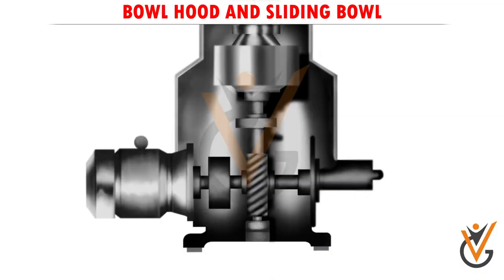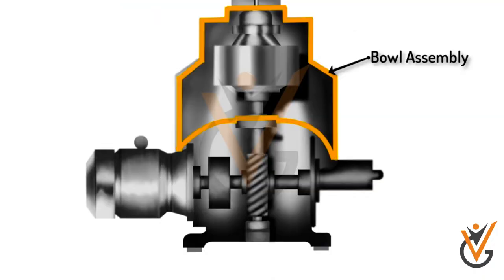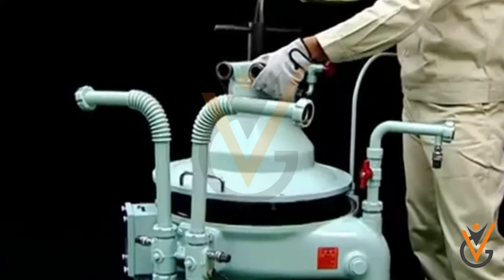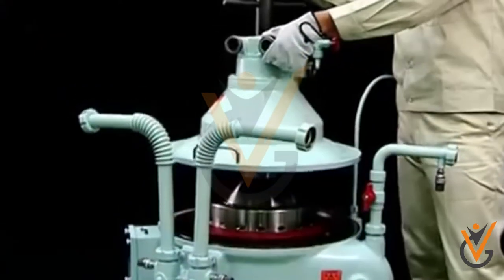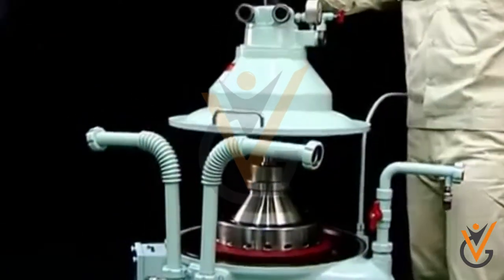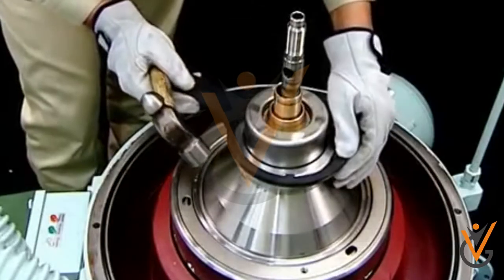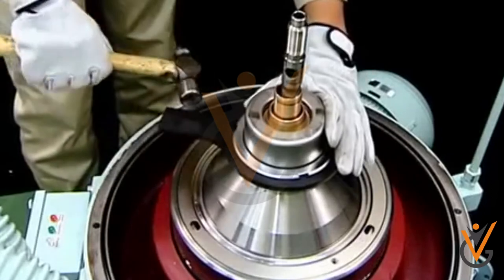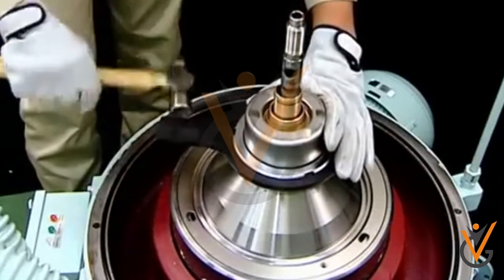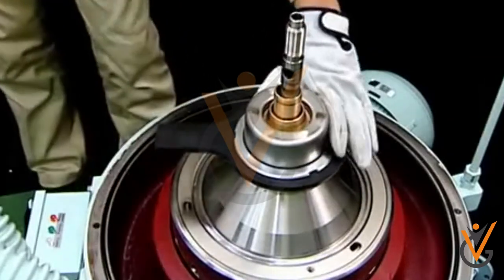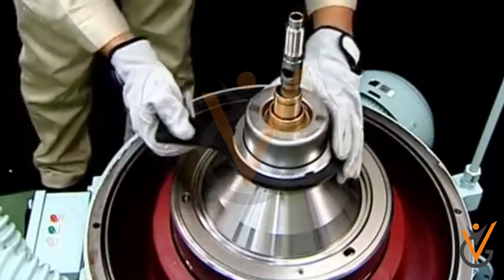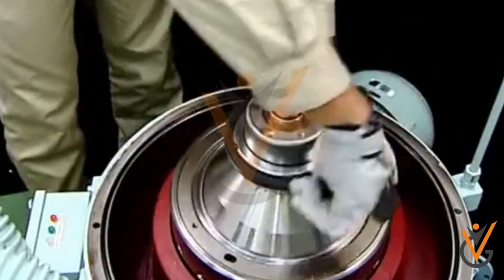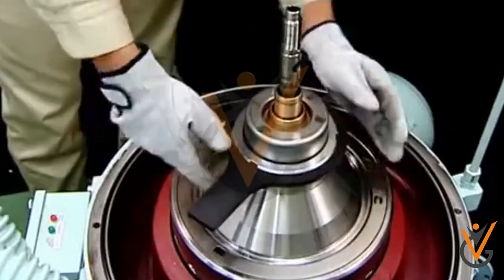Bowl hood and sliding bowl. There are bowls inside the frame, which can be a solid assembly operating non-continuous and have space enough to retain the separated sludge. There can also be an arrangement in which the upper and lower parts are separated for discharging the accumulated sludge by continuous operation. These parts are normally made up of high-tension stainless steel.